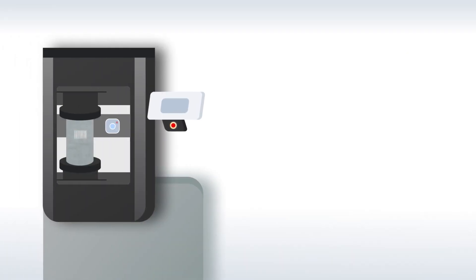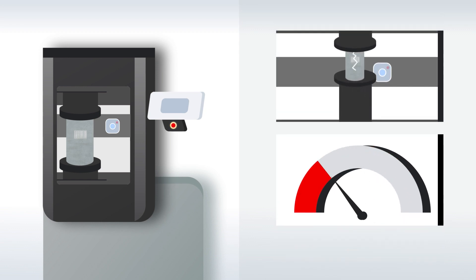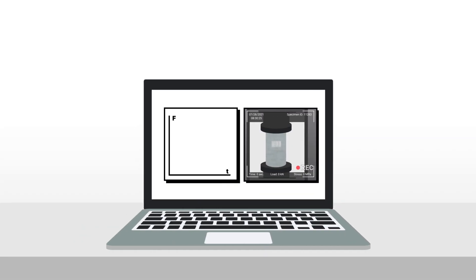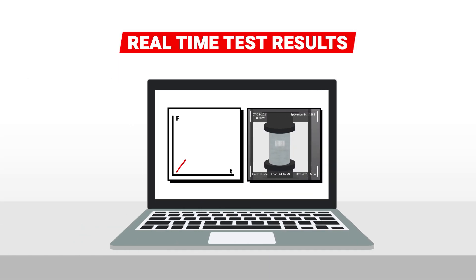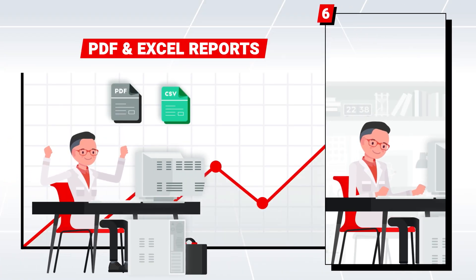The smart camera records the whole test in real time, which will be automatically performed at the correct load rate up to failure. The video recording not only proves test execution but also provides test results that cannot be altered, as the load and strength values are displayed in real time and watermarked at the end of the test.